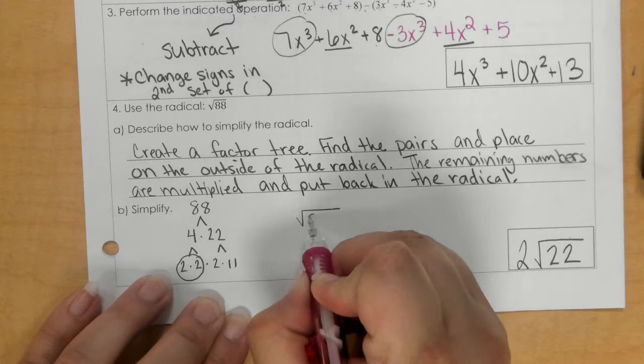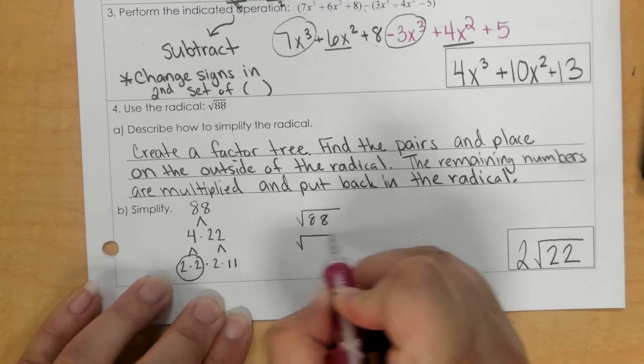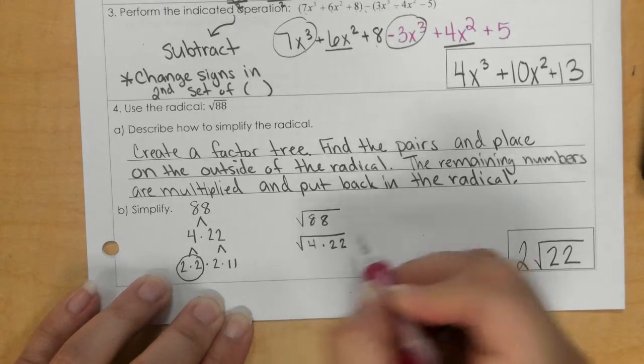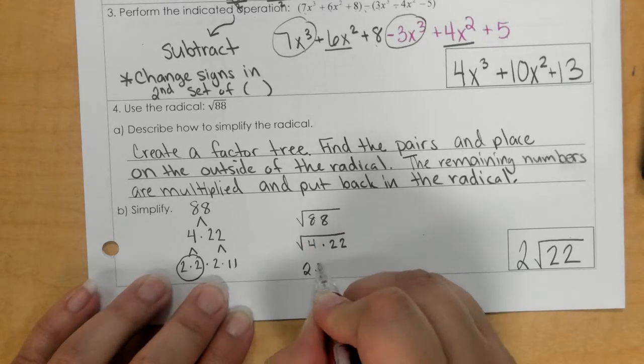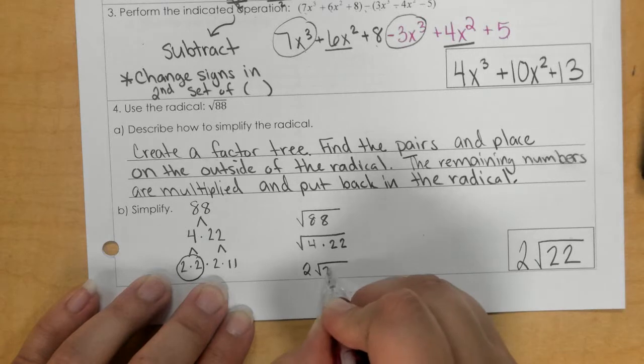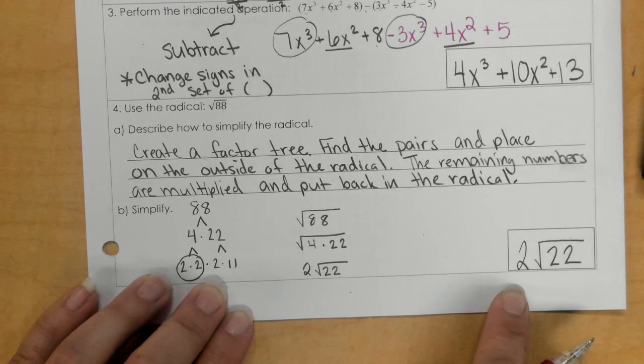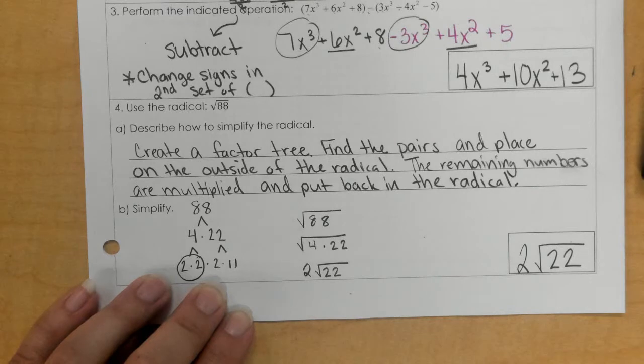The square root of 4 is 2, so it goes on the outside, and then 22 will stay here on the inside. So that would be the same answer.